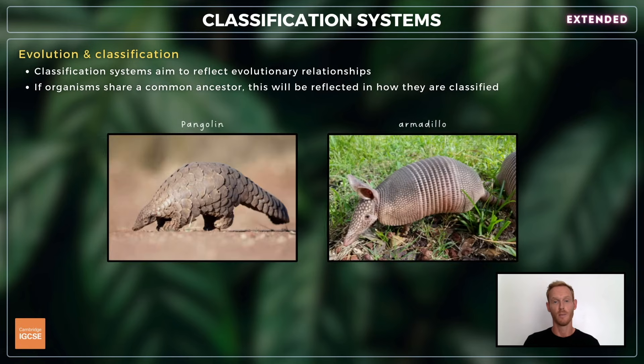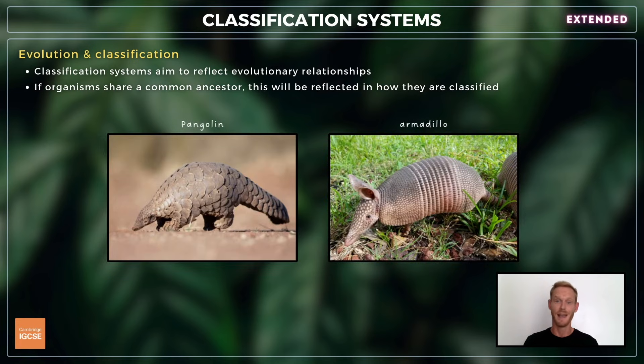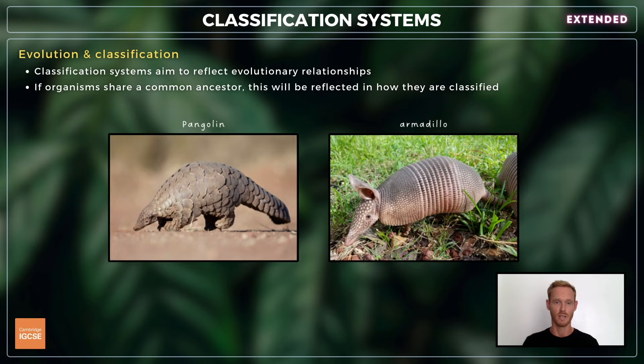For example, some animals like the pangolin and armadillo were once mistakenly grouped together based on their similar appearance, but their lack of a common ancestor means their classification is now different.